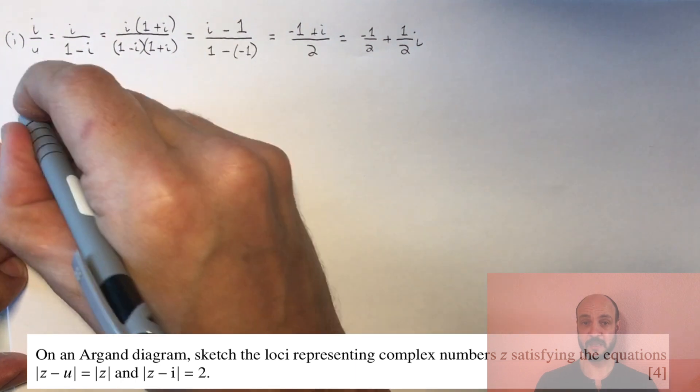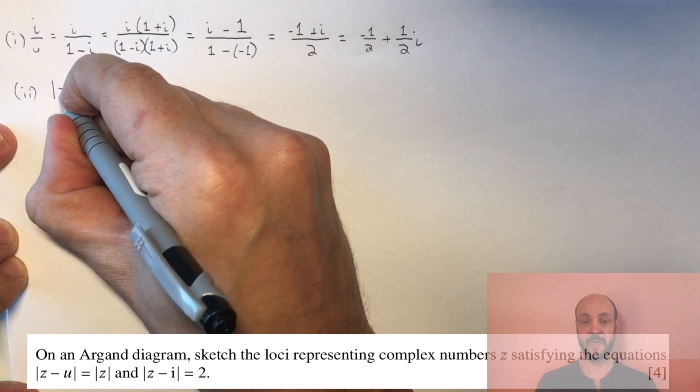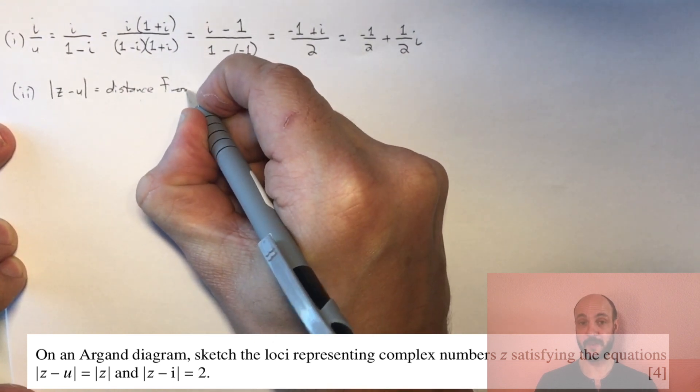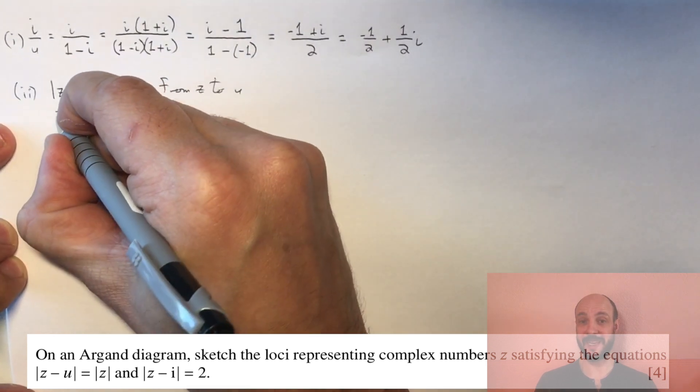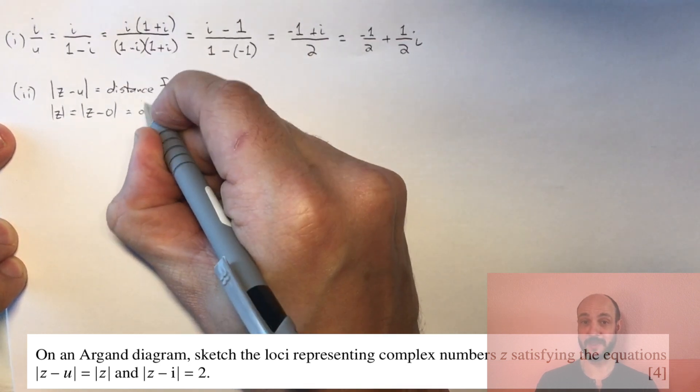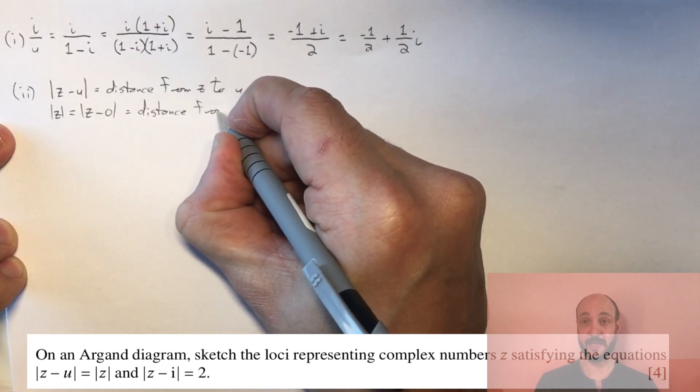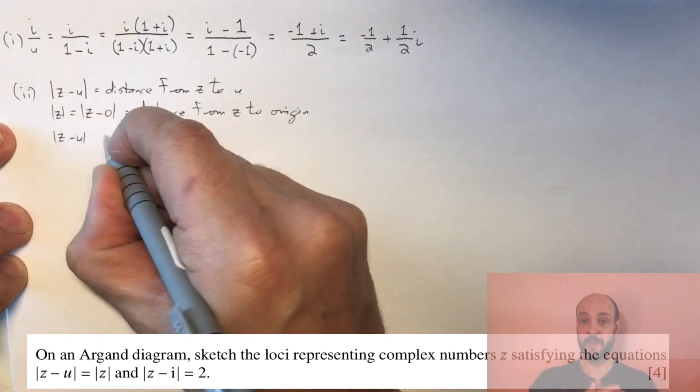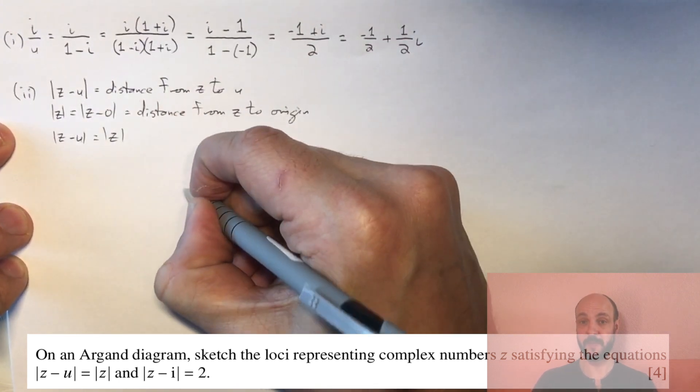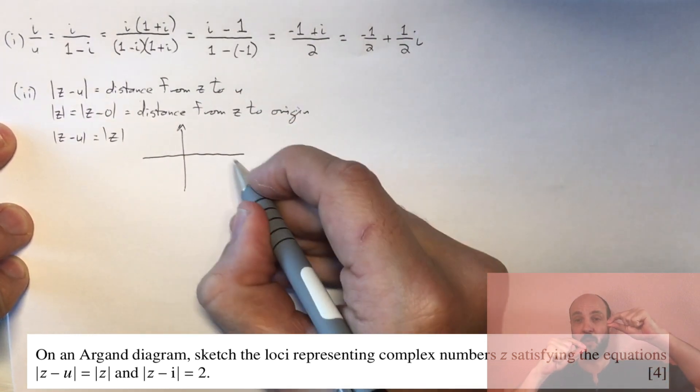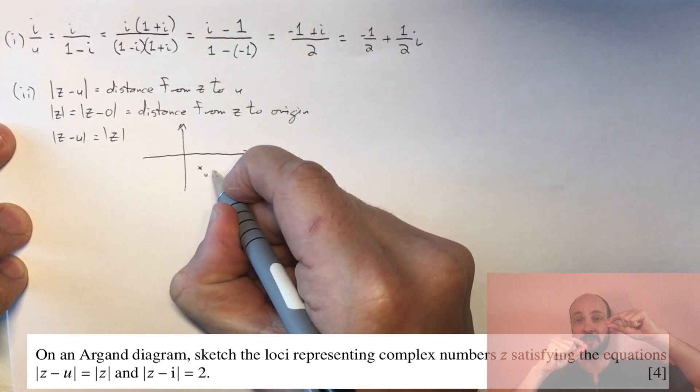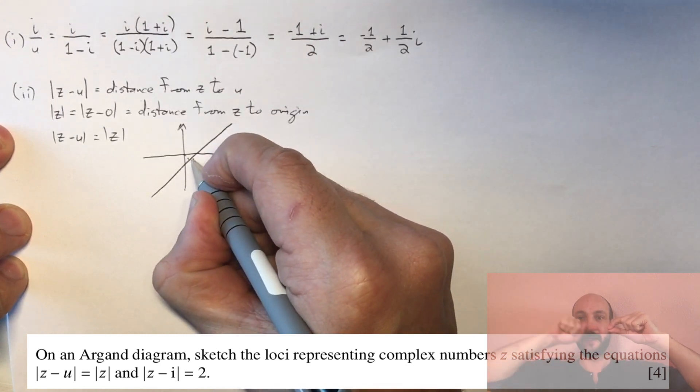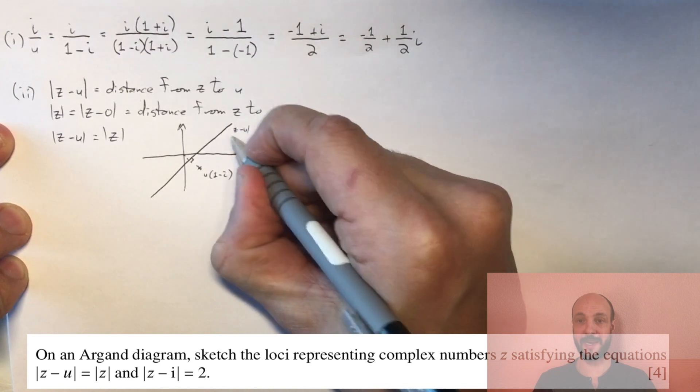For the second part of the question, we need to think what |z - u| and |z| represent. |z - u| means the distance between z and u, and |z| is the distance between z and the origin. If |z| = |z - u|, the loci is always the same distance from the origin as it is from point u. Geometrically speaking, that's the perpendicular bisector of the line joining these two points. So we need to draw that line onto our graph.